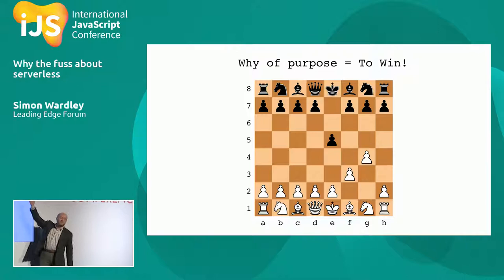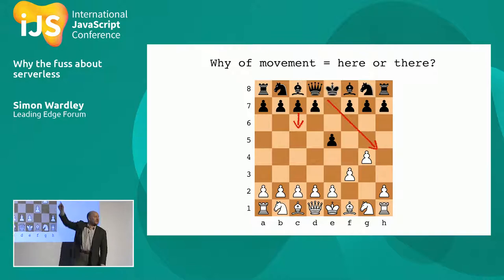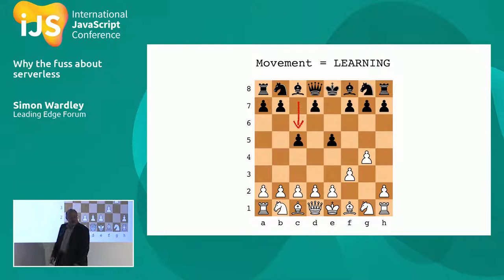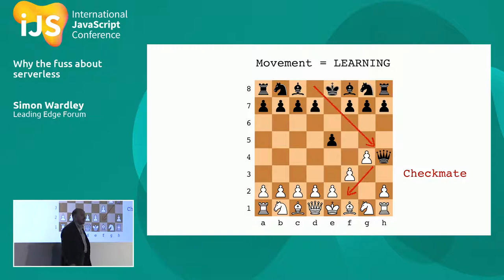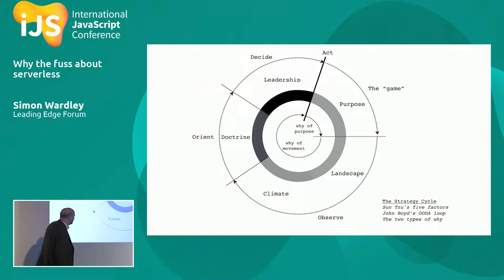Best to explain it with chess: your why of purpose might be to win the game; your why of movement is do I move this piece or that piece? It's through moving that we actually learn. If I move this piece, I gain a positional advantage; if I move this piece, it's checkmate — fool's mate. So we have a strategy cycle.